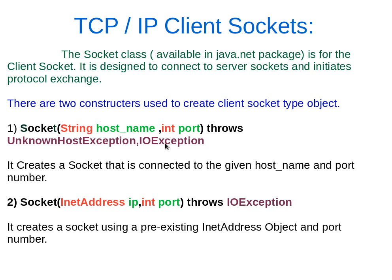Now let us understand the TCP/IP client socket. The Socket class, available in the java.net package, is for the client socket. It is designed to connect to a server socket and initiate the protocol exchange. There are two constructors to create a client socket. The first takes two parameters: a String hostname and a port number, and will throw an UnknownHostException as well as an IOException. The second constructor takes an InetAddress object and a port number as an integer, and will throw an IOException.